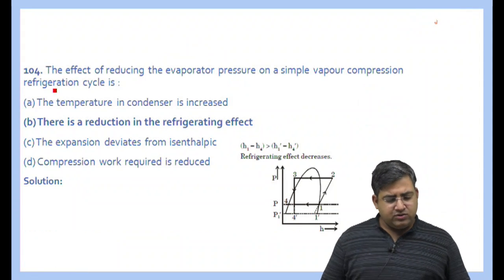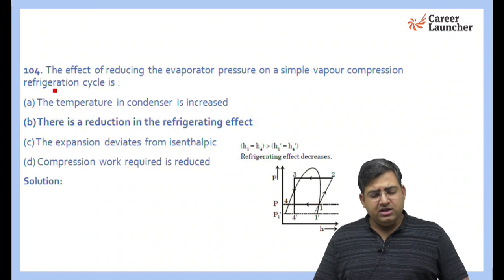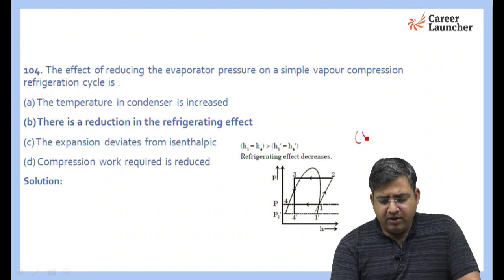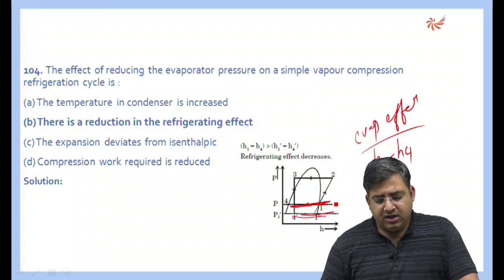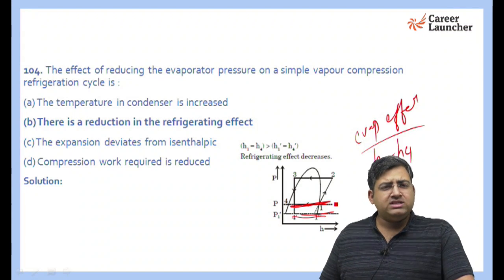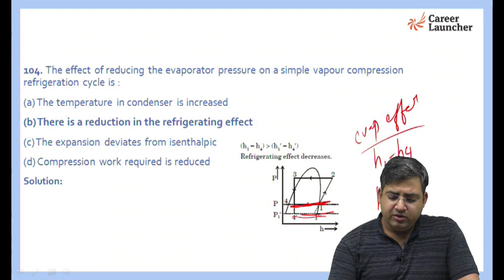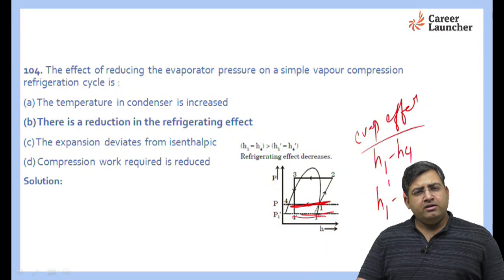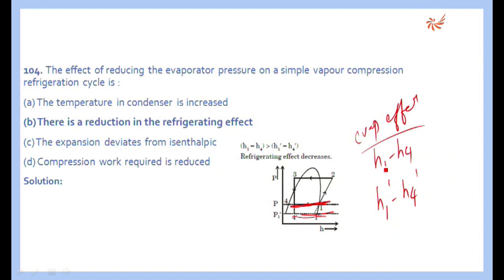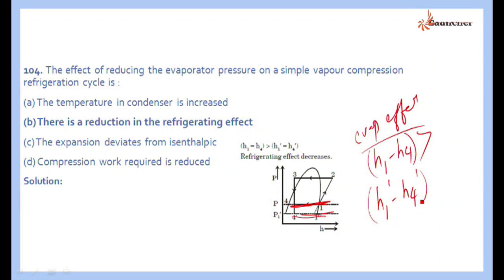The next question asks about the effect of reducing the evaporating pressure. The evaporating effect is given by h1 minus h4. When you reduce pressure, you get new points h4 dash and h1 dash, so the new enthalpy difference is h1 dash minus h4 dash. You can clearly see that h1 minus h4 is greater than h1 dash minus h4 dash, meaning reducing the evaporator pressure causes a decrease in evaporating or cooling effect. The right answer is B.